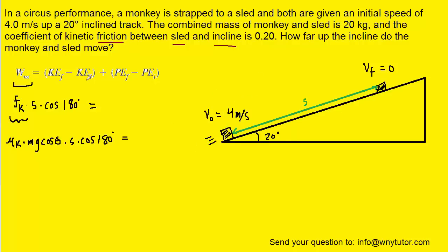As for the terms on the right side, we know that at the end of the motion there's no speed, so the final kinetic energy will drop out. Also, initially, the sled and monkey are located at the bottom of the ramp, so there would be no gravitational potential energy initially.